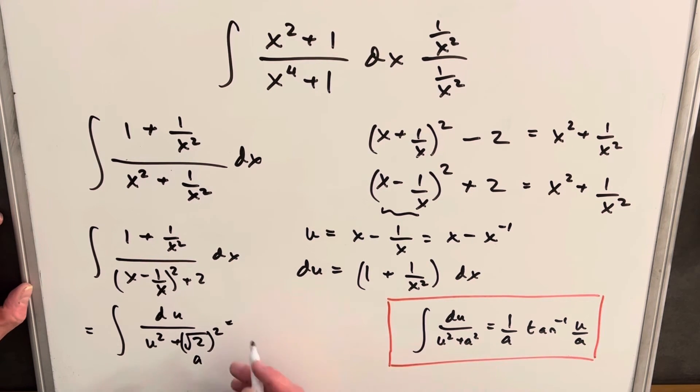So let's just do this. We're going to have 1 over our a, square root of 2, tan inverse our u over square root of 2.